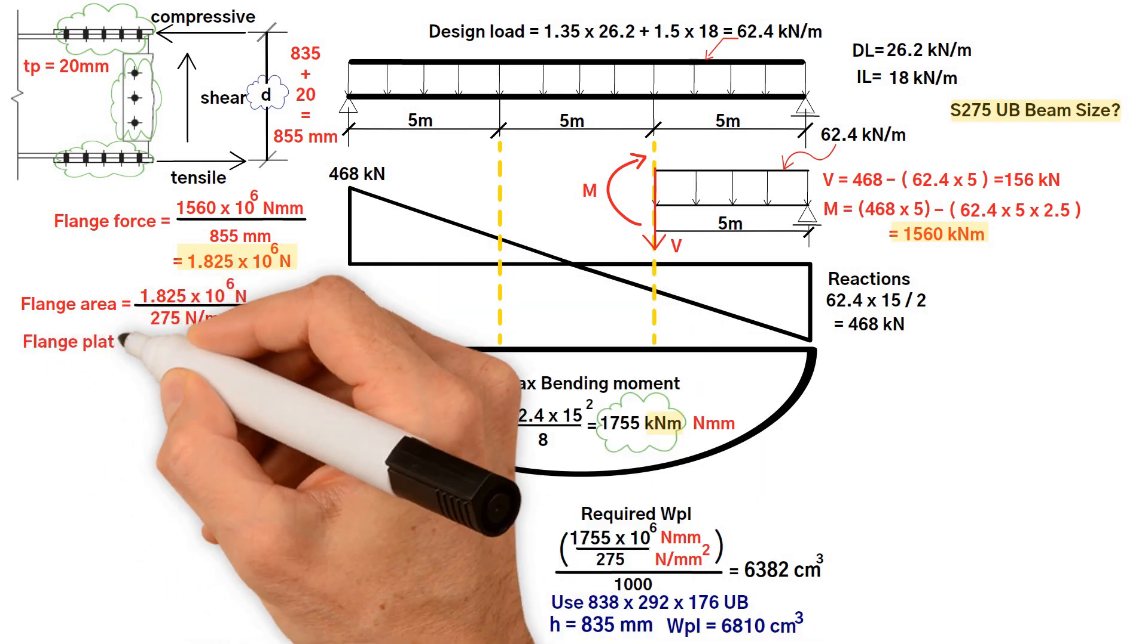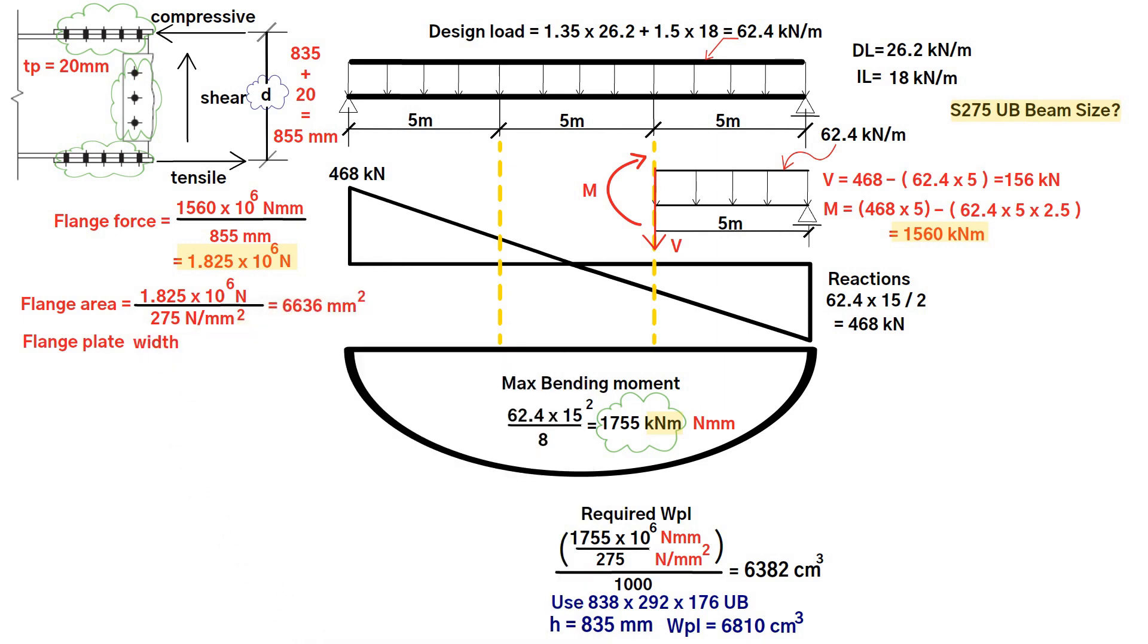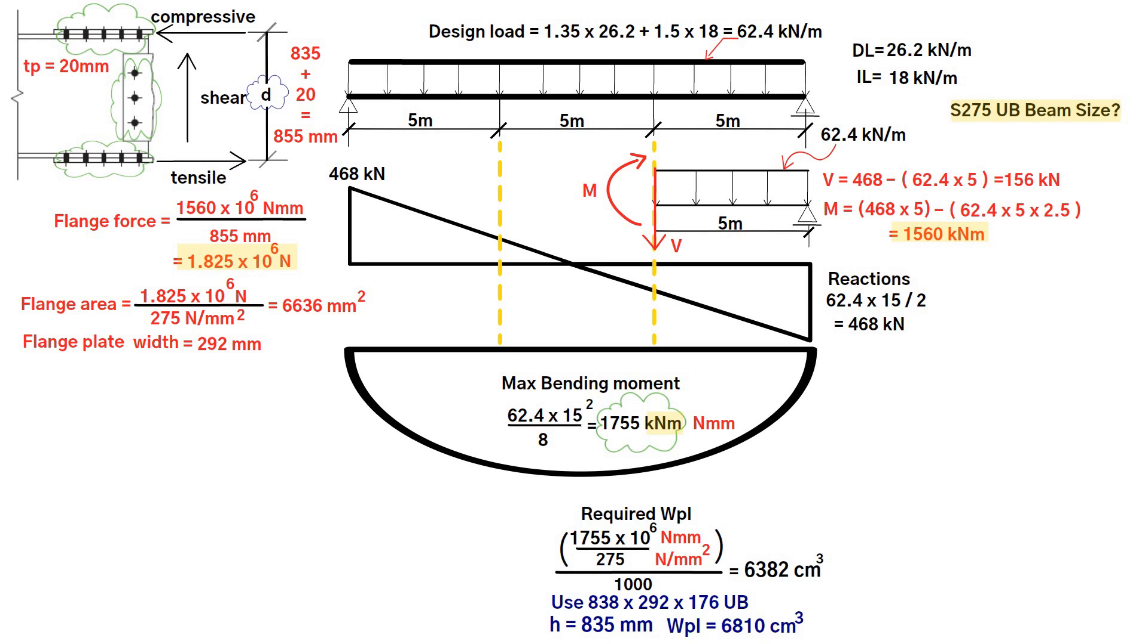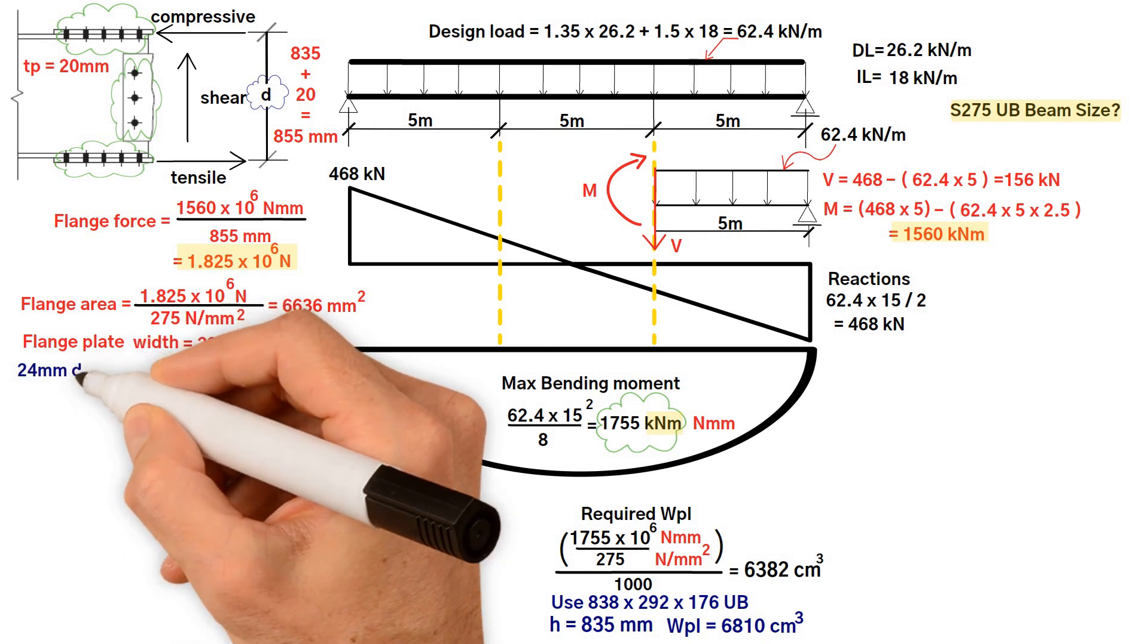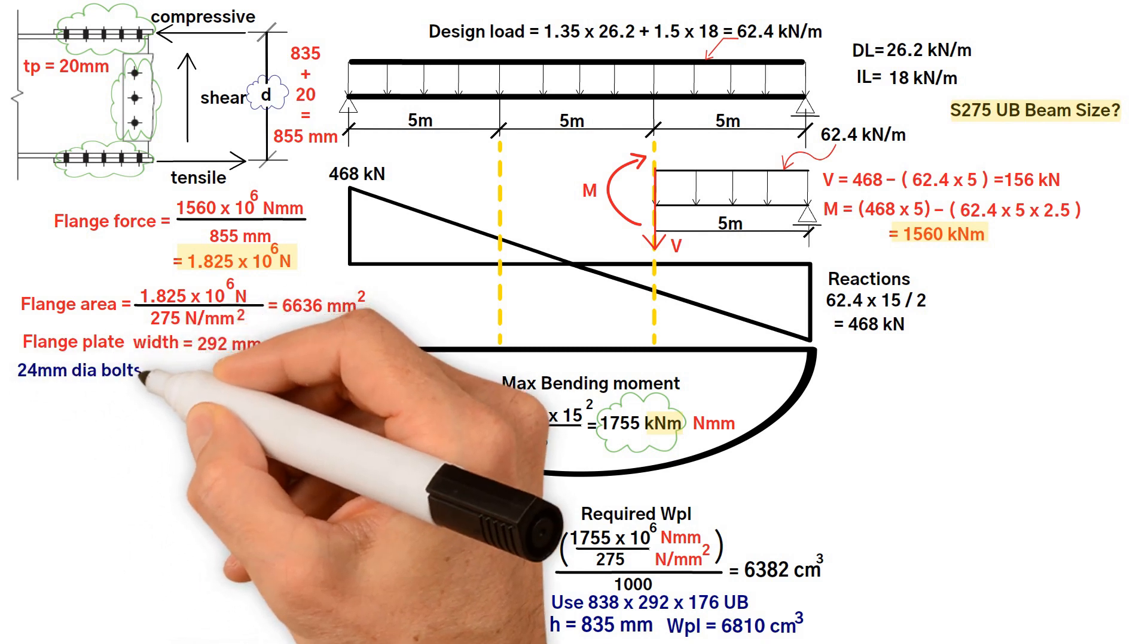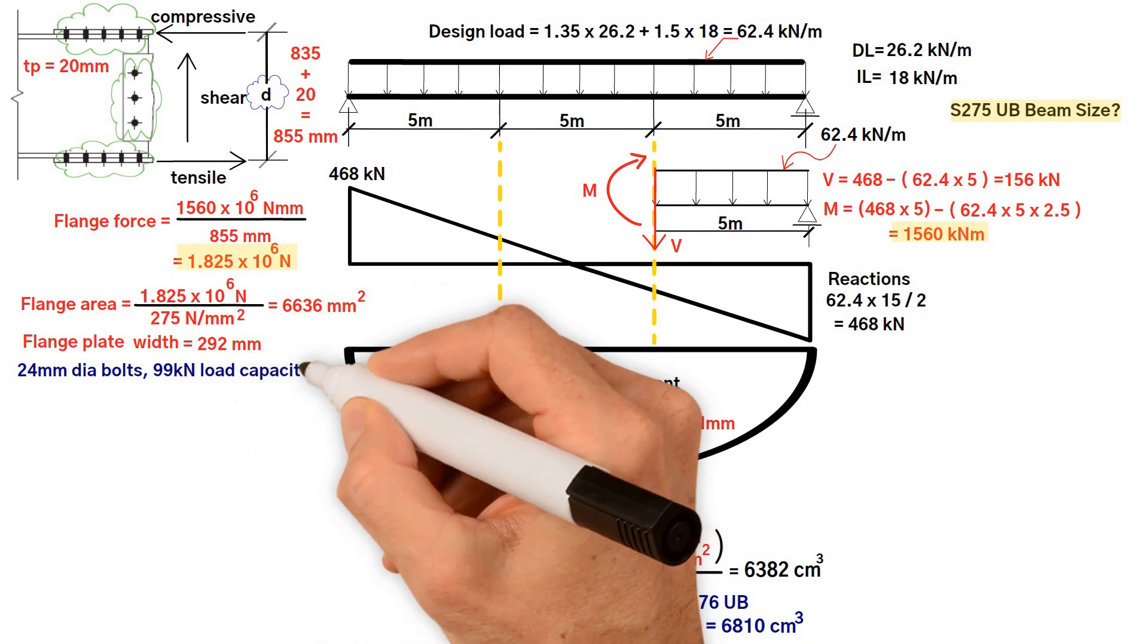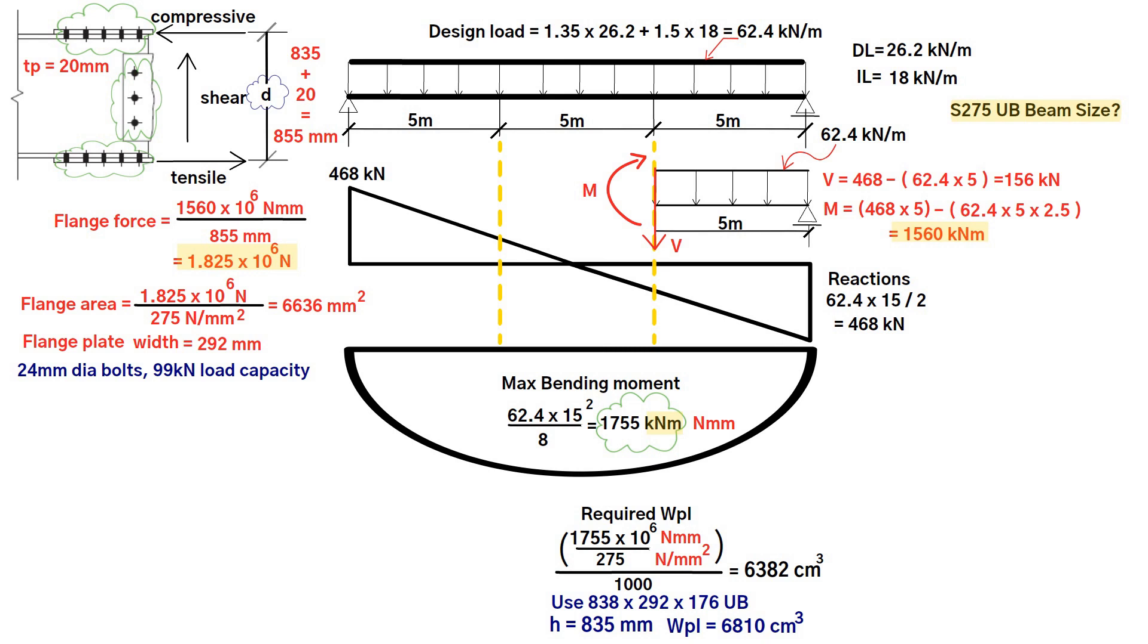Make the flange plate the same width as the beam, for instance 292 millimeter. It is proposed to use 24 millimeter diameter preloaded bolts with a design single shear load capacity is 99 kilonewton. We need to ensure there is enough room for a double row on each side of the flange.